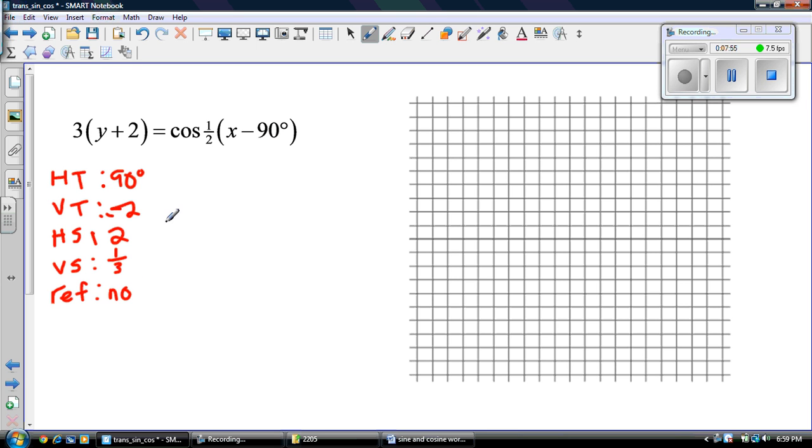I'll write my mapping rule for this one, exactly the same. So here we go, we have 2x, so my HS times x, plus 90, comma, 1 over 3, y, and then minus 2. And that's my mapping rule.